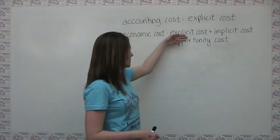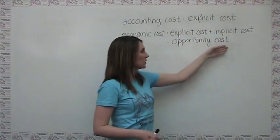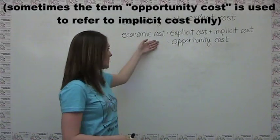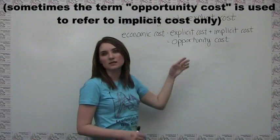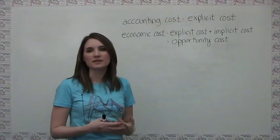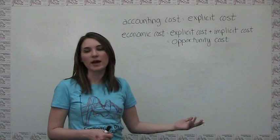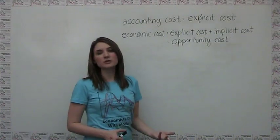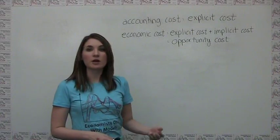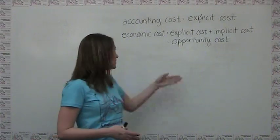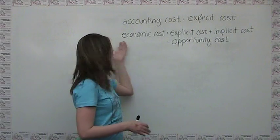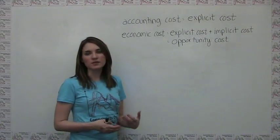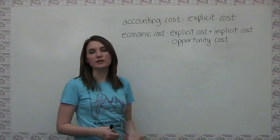We can think of the total of these explicit and implicit costs as an overall opportunity cost. So we have economic cost as opportunity cost, or the total value of what has to be given up in order to take a particular path or make a certain decision. In general, it's safe to assume that whenever an economist talks about a cost, we're talking about opportunity cost, or this all-inclusive economic cost, which is helpful to keep in mind as we go through our cost and profit calculations.